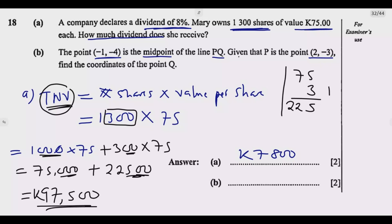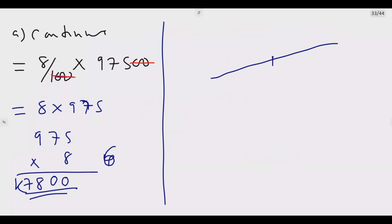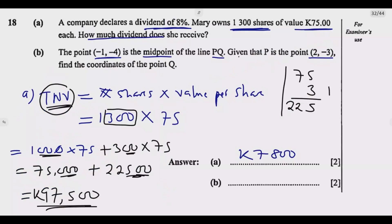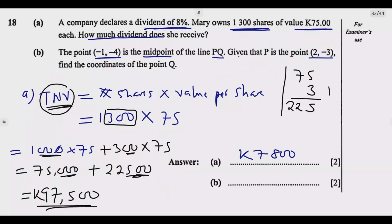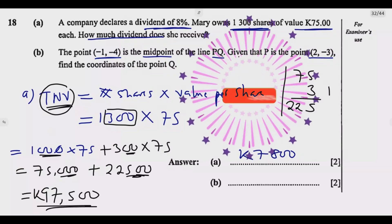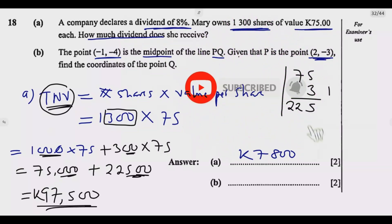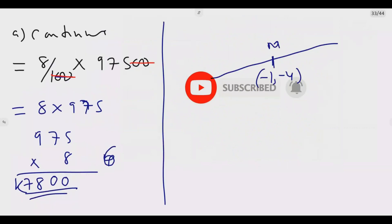So what this tells me is I have the midpoint, which is (-1, -4). This is the midpoint. Then I have P, which is (2, -3). So I'm looking for Q. This is P, which is (2, -3). I'm looking for this value, which is Q, which is (X, Y).